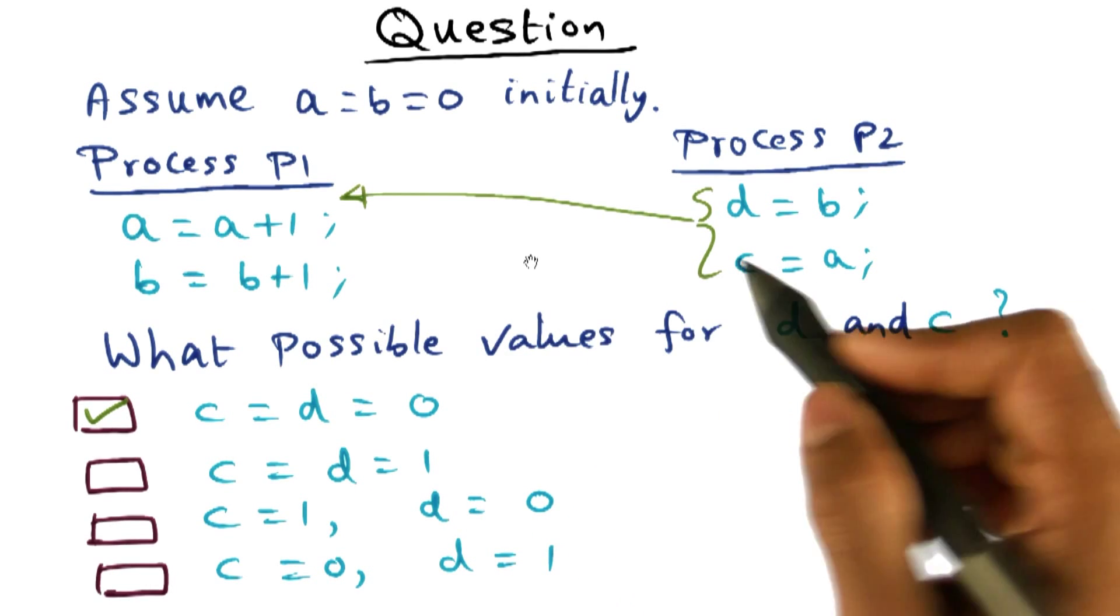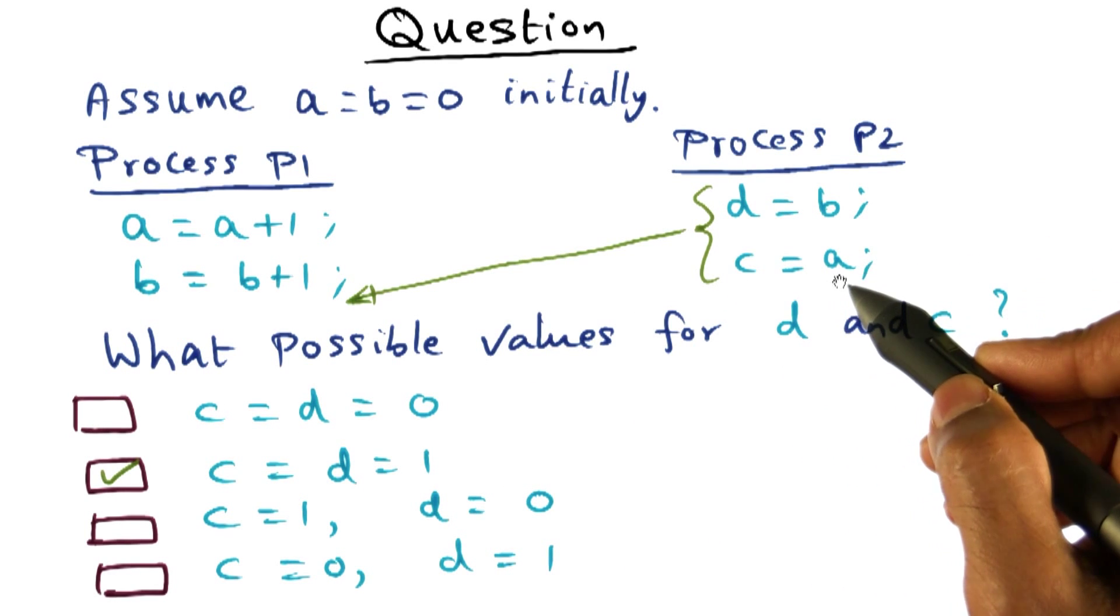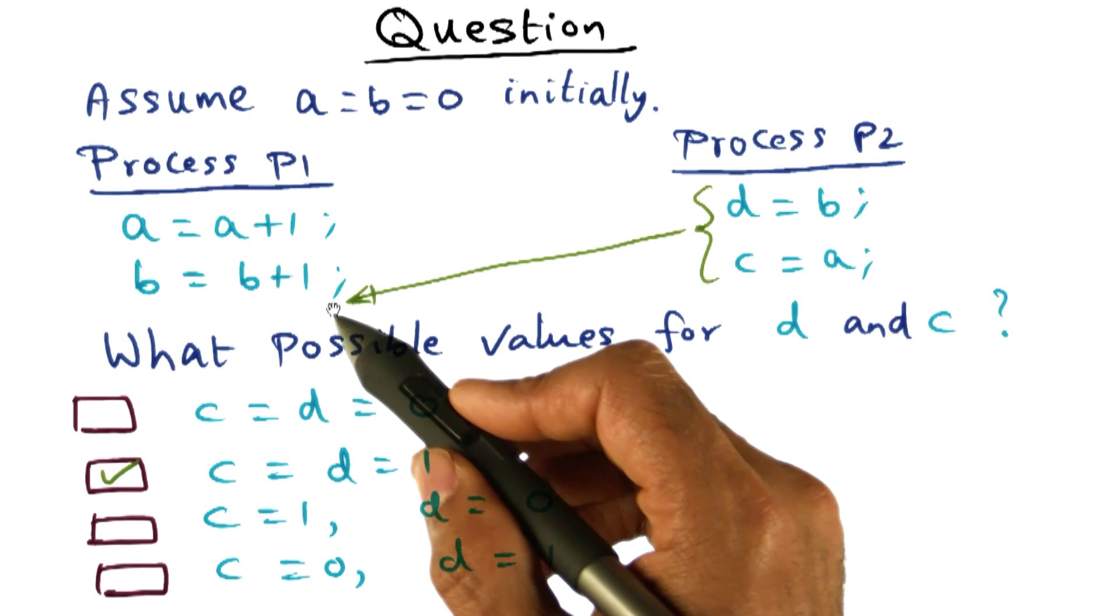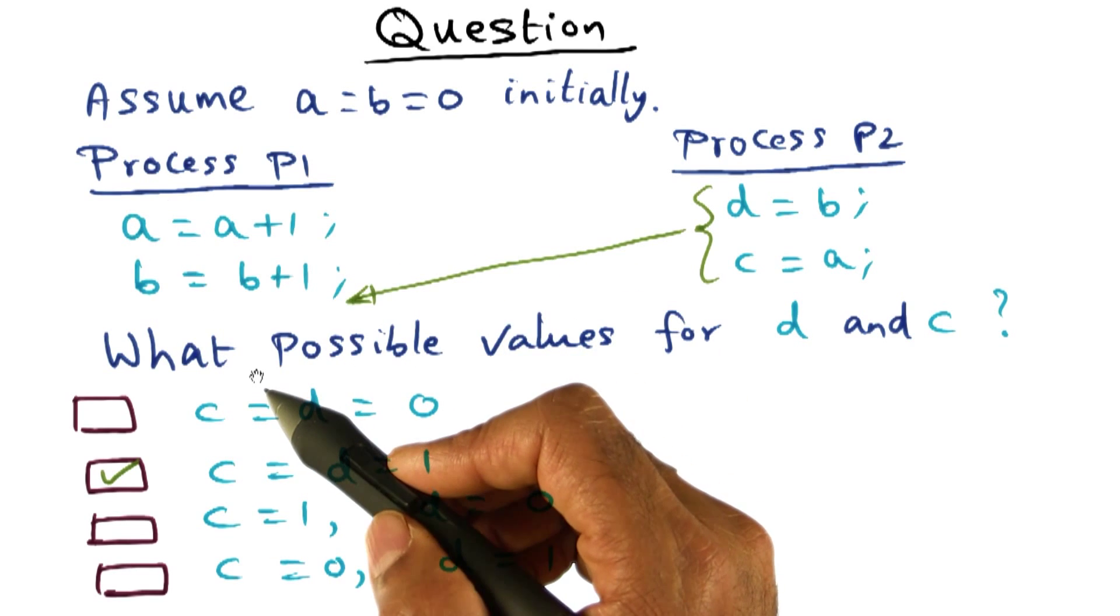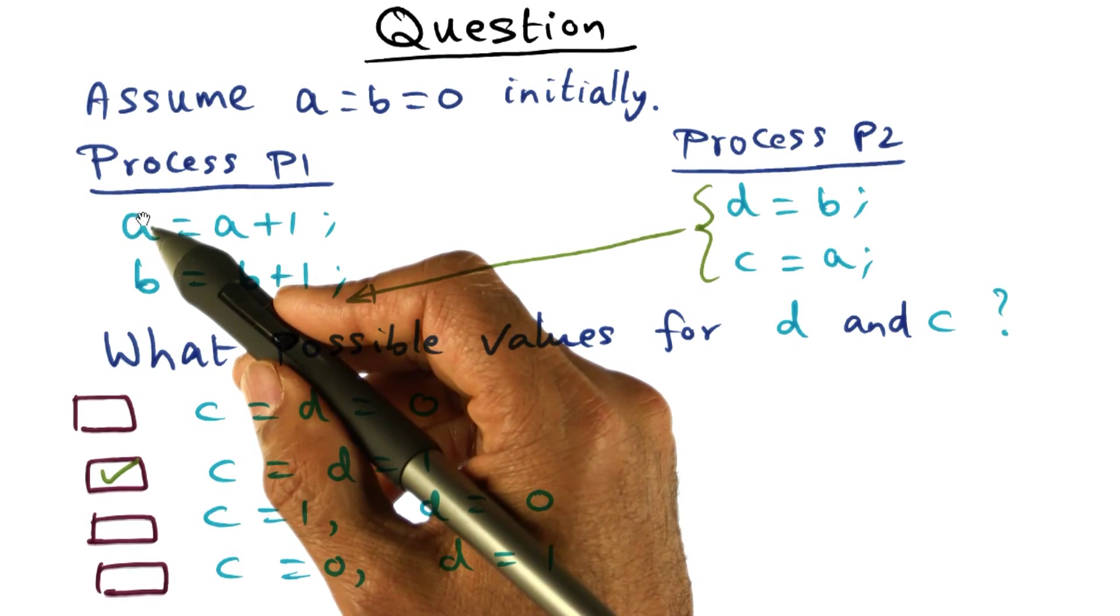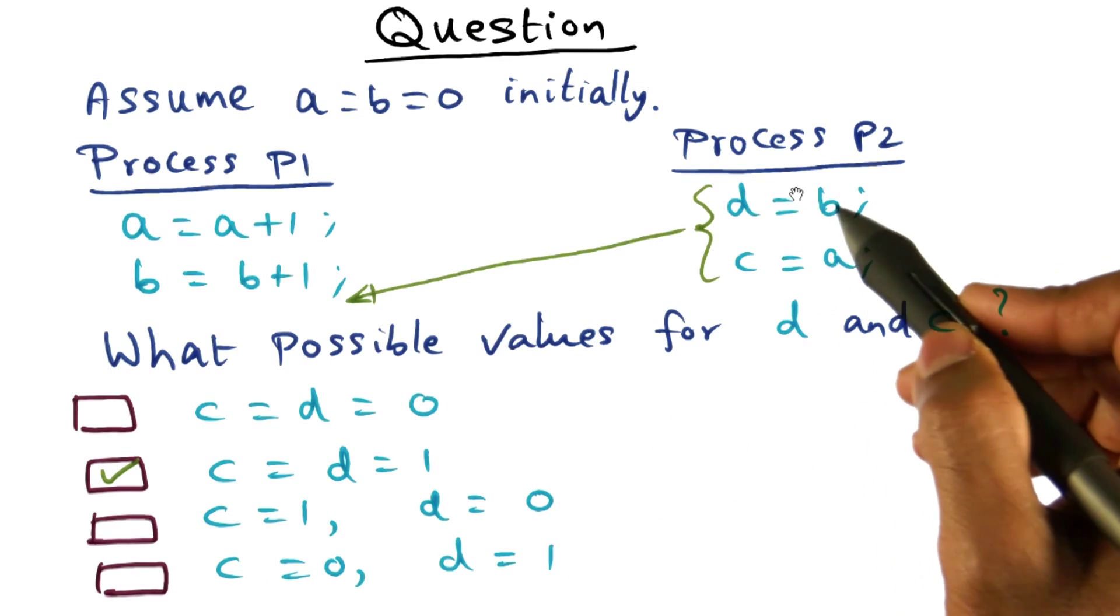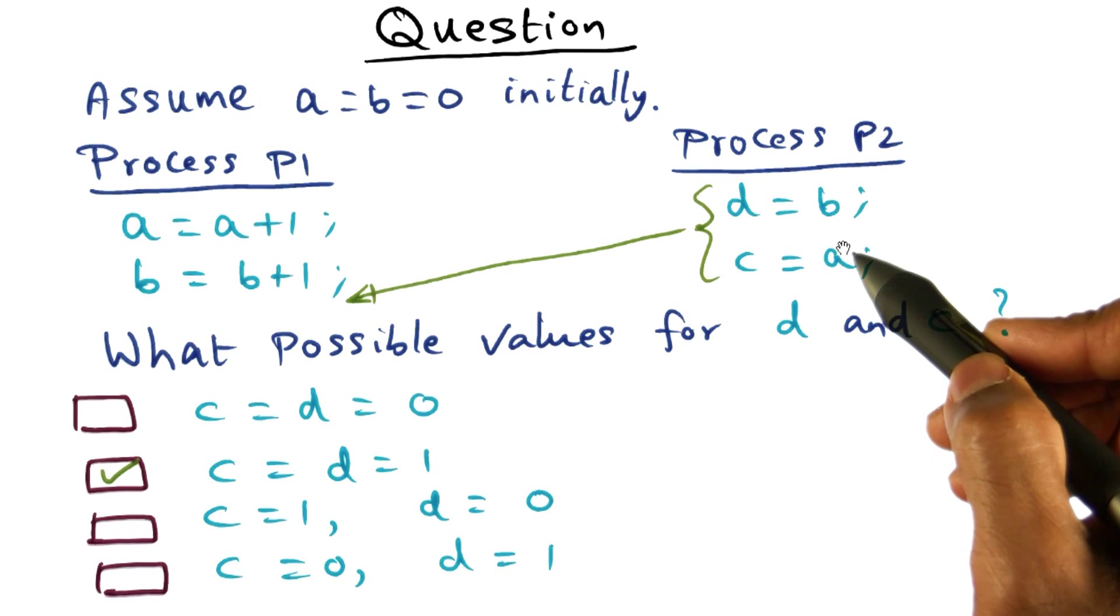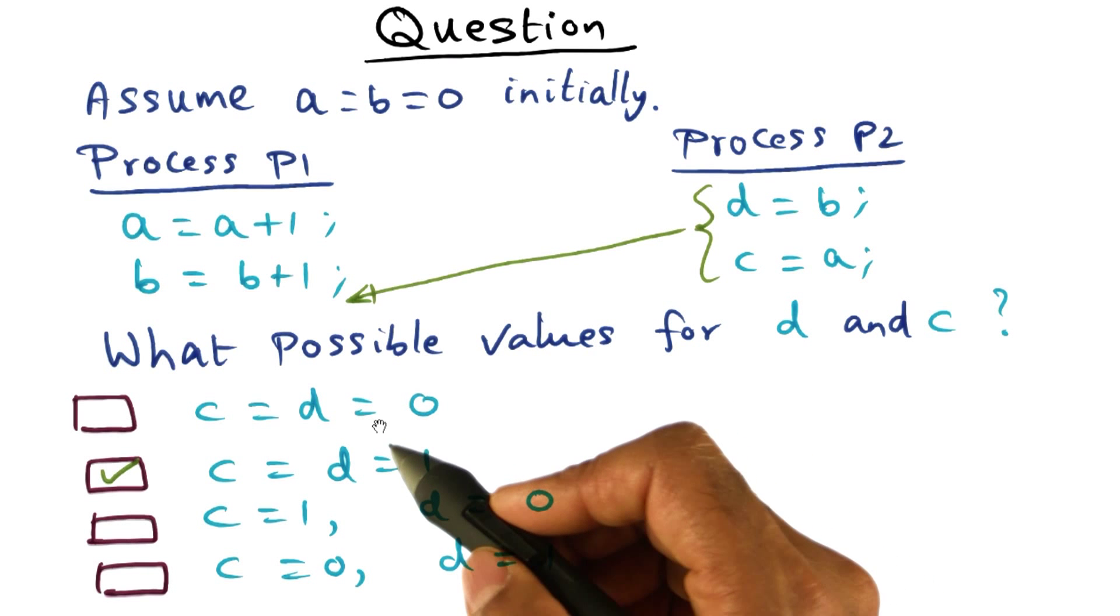The second possibility is that both these instructions that are executed on P2 get executed after both the instructions on P1 have completed execution. So in this case, both A has gotten a new value, B has gotten a new value, and so when we go here and make the assignments, then both D and C are going to have the new values that are in B and A respectively. And so this is a possibility, that both C and D have a value 1 in them.